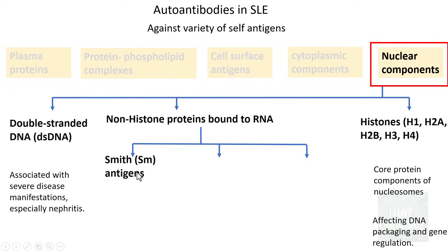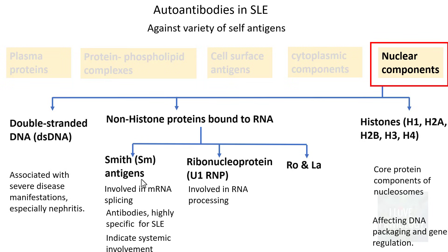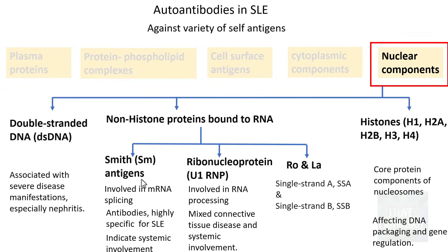Another important antigen group includes Smith antigen, ribonucleoprotein (U1-RNP) antigen, and RO and LA. Smith antigen is involved in mRNA splicing — antibodies against Smith antigen are highly specific for SLE. U1-RNP is involved in RNA processing; autoantibodies against it result in mixed connective tissue disease and systemic involvement. RO (SSA) and LA (SSB) can be seen in both nucleus and cytoplasm; while present in SLE, they are more commonly associated with Sjögren's syndrome.